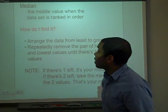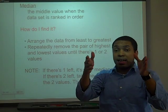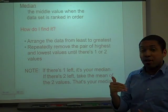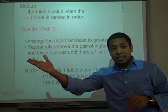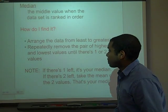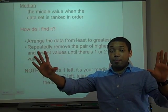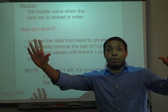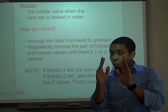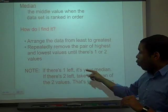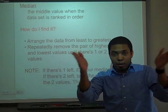Next, we have median. Median is the middle value of a data set when it's put in order. The first step is to arrange the data in order from least to greatest. Once we do that, we repeatedly remove the lowest and the highest in pairs — lowest and highest is one pair, lowest and highest is another pair — until we are left with just one number in the middle. If we're left with one number, that is our median.